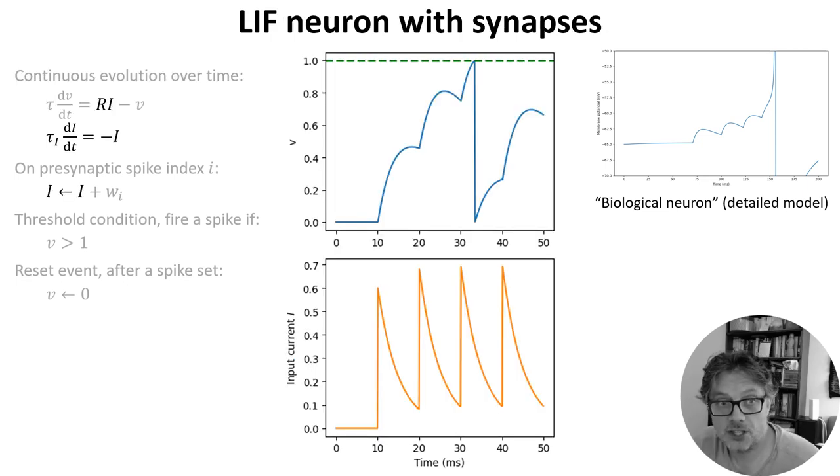A simple answer is to change the model so that instead of having an instantaneous effect on the membrane potential, instead, it has an instantaneous effect on an input current, which is then provided as an input to the leaky integrate and fire neuron.